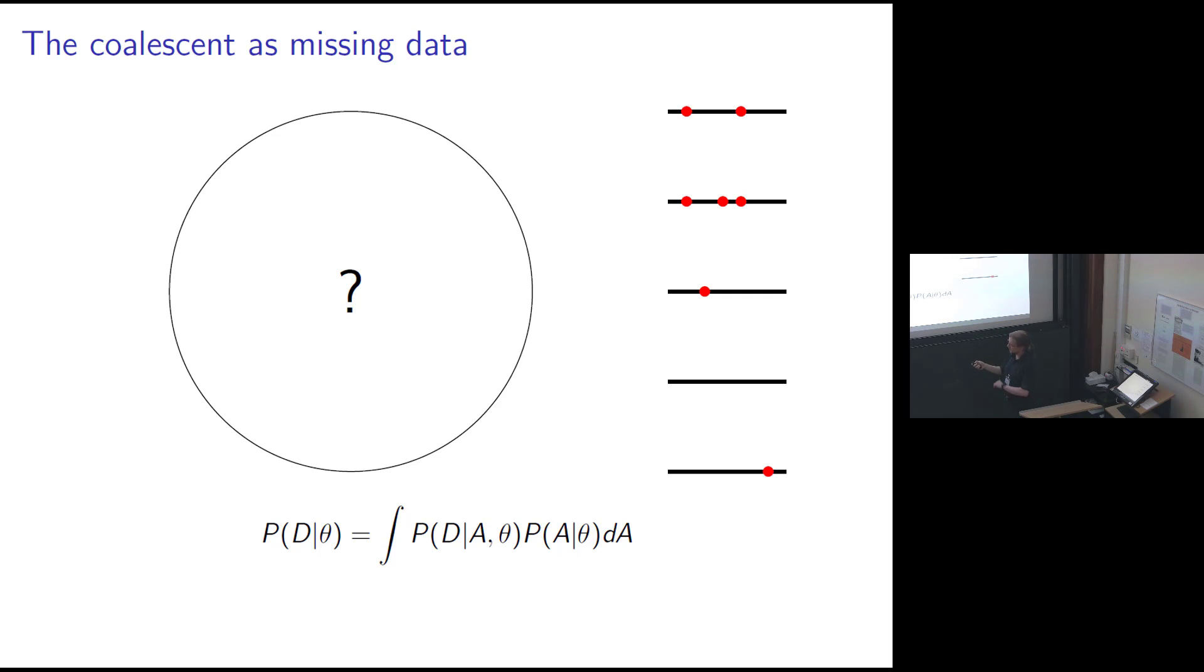Instead we have to look at this guy here or something resembling it. Let me unpack the notation a little bit. So A here is supposed to be an ancestry, that's the ancestral tree. So what I'm doing here is so-called data augmentation, which is if there's something that I don't know but I wish that I did know such that I can evaluate the likelihood function, let me pretend I condition on it and then all I have to do is remember to integrate it afterwards. And so here I've conditioned on the ancestral tree, and this is the probability of the ancestral tree given parameters, and then I'm integrating over all possible ancestries.